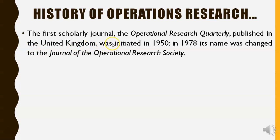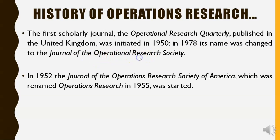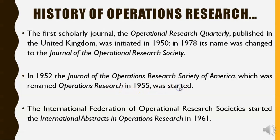The first scholarly journal, the Operational Research Quarterly, published in the United Kingdom, was initiated in 1950, and in 1978 its name was changed to the Journal of the Operational Research Society. In 1952, the Journal of the Operations Research Society of America was started, which was renamed Operations Research in 1955. The International Federation of Operational Research Societies started the journal International Abstracts in Operational Research in 1961.